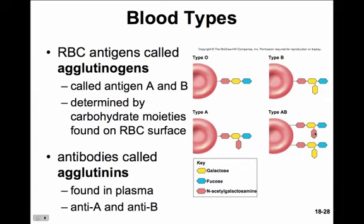Type AB will have both types of labels — the A antigen and the B antigen. Type O has just the regular straight chain. You don't need to memorize the galactose, fucose, and N-acetylglucosamine molecules. Just recognize that blood type A expresses a particular label, type B expresses a different label, and type AB expresses both the labels of type A and type B.